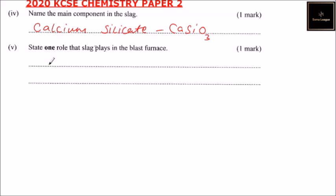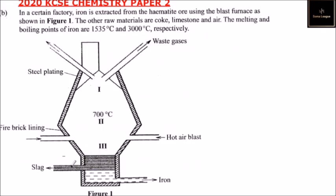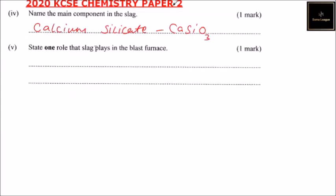State one role that the slag plays in the blast furnace. If you go back to the diagram, you can see the slag is covering the iron. So it prevents oxidation of iron by the hot air.